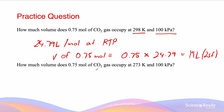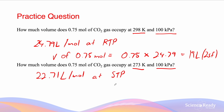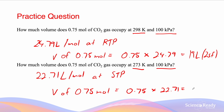Similarly, the second question asks how much volume 0.75 moles of CO2 gas occupies at 273 Kelvin and 100 kPa. 273 Kelvin and 100 kPa is STP, which is given on our data sheet as 22.71 liters per mole. So the volume of 0.75 moles equals 0.75 multiplied by 22.71, which is 17 liters to two significant figures. Remember, two significant figures because that's the least precision given in the question.